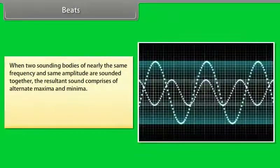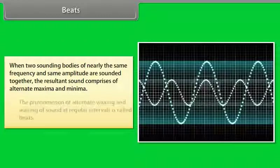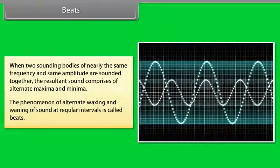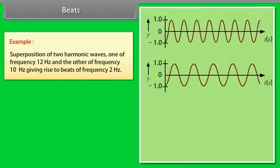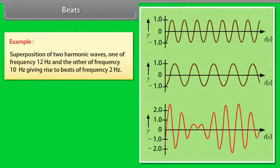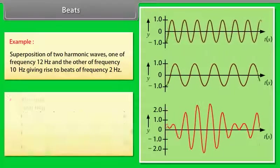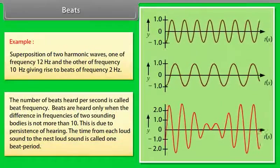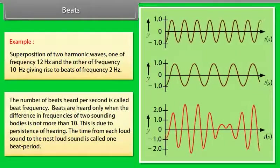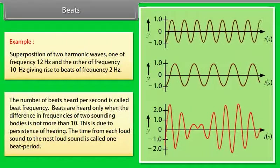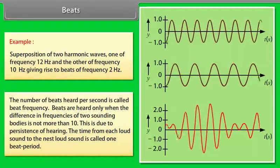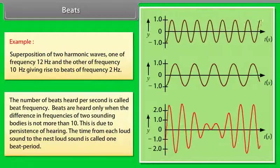Beats: When two sounding bodies of nearly the same frequency and same amplitude are sounded together, the resultant sound comprises alternate maxima and minima. The phenomenon of alternate waxing and waning of sound at regular intervals is called beats. For example, two harmonic waves — one of frequency 12 Hz and the other of frequency 10 Hz — when superimposed give rise to beats of frequency 2 Hz. The number of beats heard per second is called beat frequency. Beats are heard only when the difference in frequencies of the two sounding bodies is not more than 10, due to persistence of hearing. The time from each loud sound to the next loud sound is called one beat period.